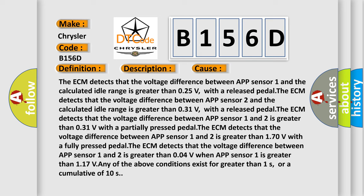With a released pedal, the ECM detects that the voltage difference between APP sensor 1 and 2 is greater than 0.31V. With a fully pressed pedal, the ECM detects that the voltage difference between APP sensor 1 and 2 is greater than 1.70V.